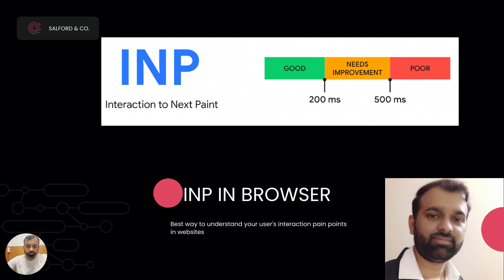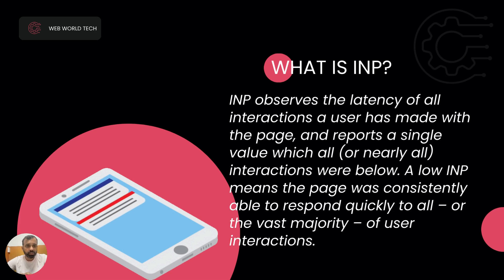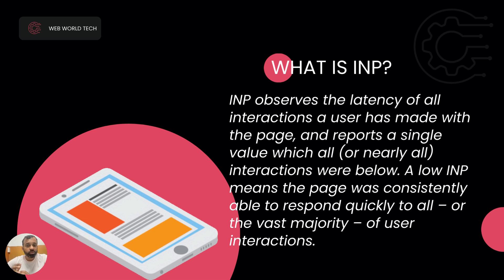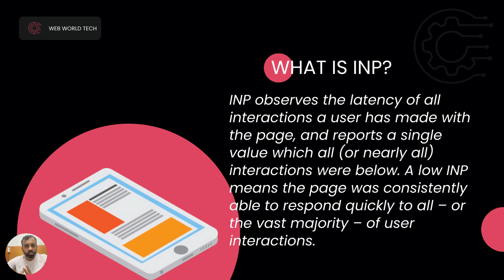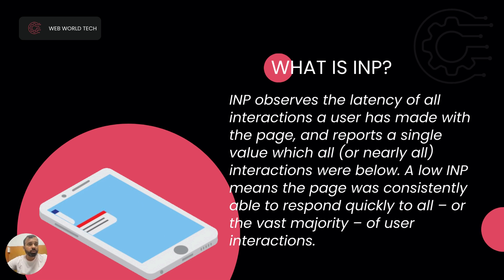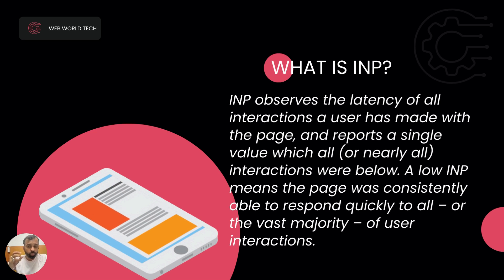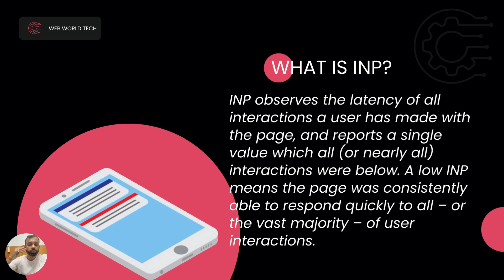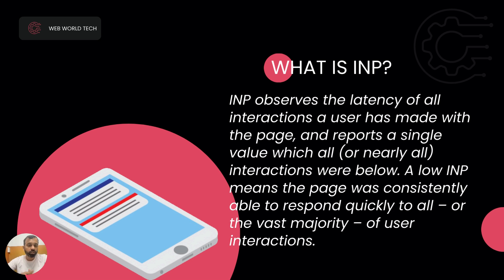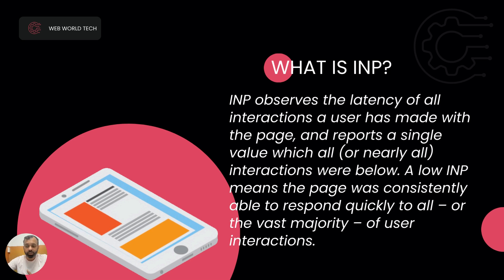INP observes the latency of all interactions a user has made with the page and reports a single value. On a page, there can be many elements where users interact, and many types of interactions. It's important to understand how each one behaves and what kind of experience you're delivering across different devices and network conditions — whether users are in cities or on varying network types.